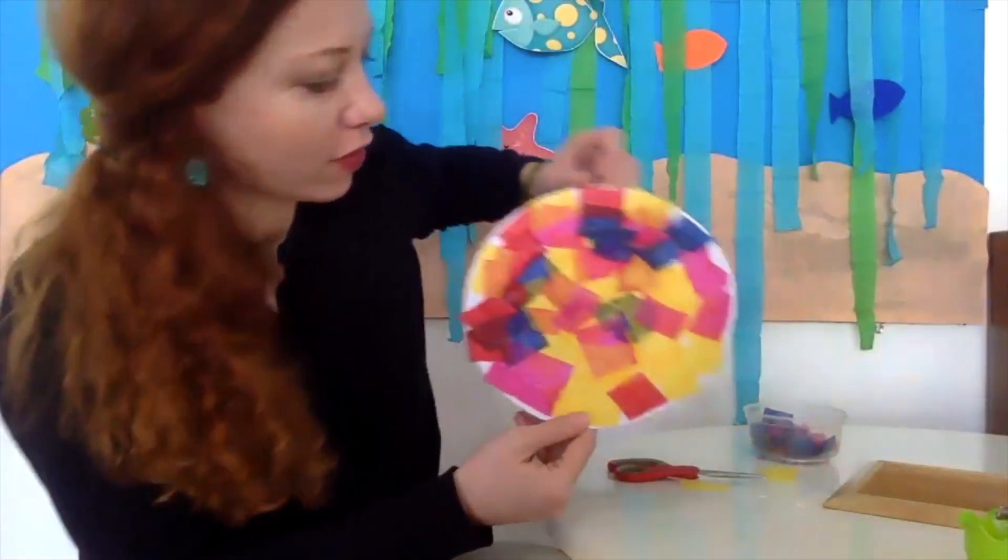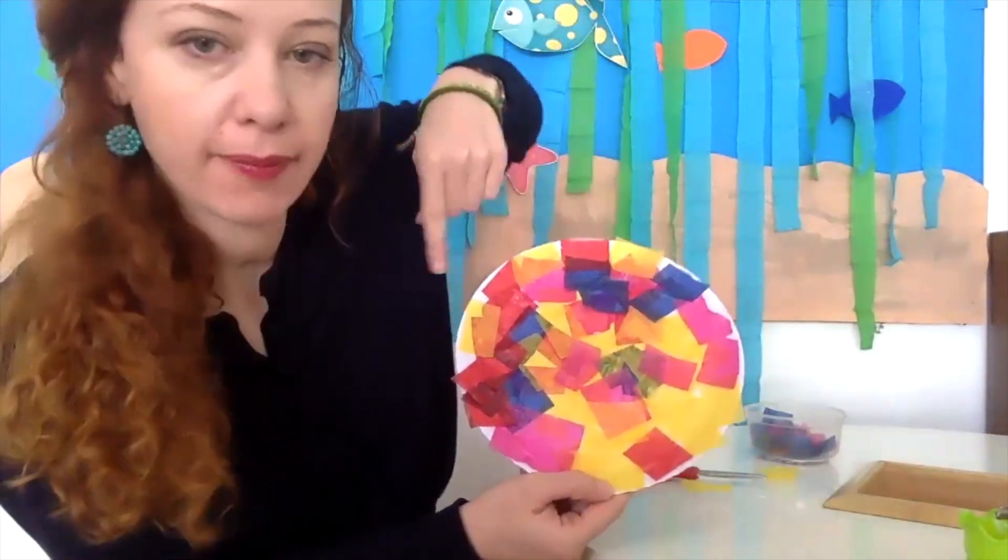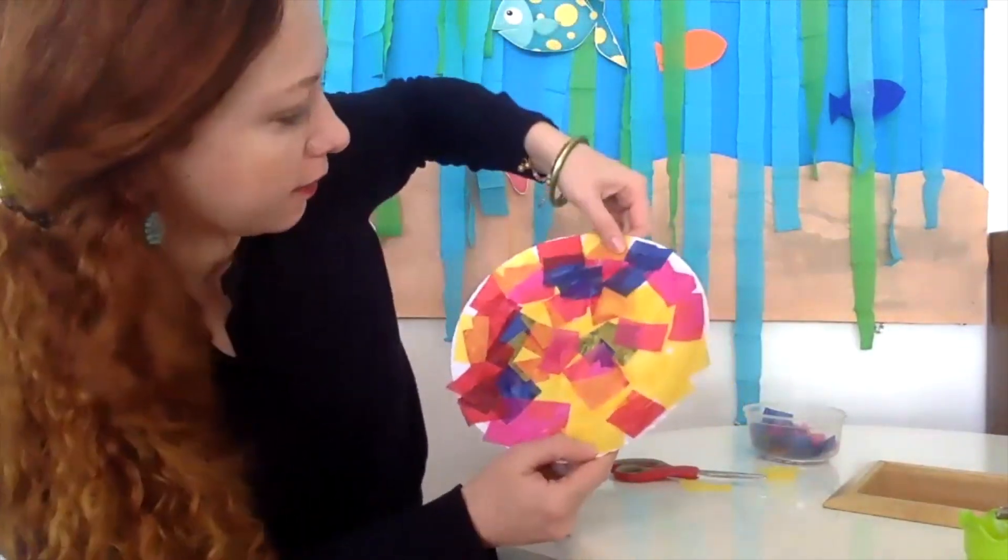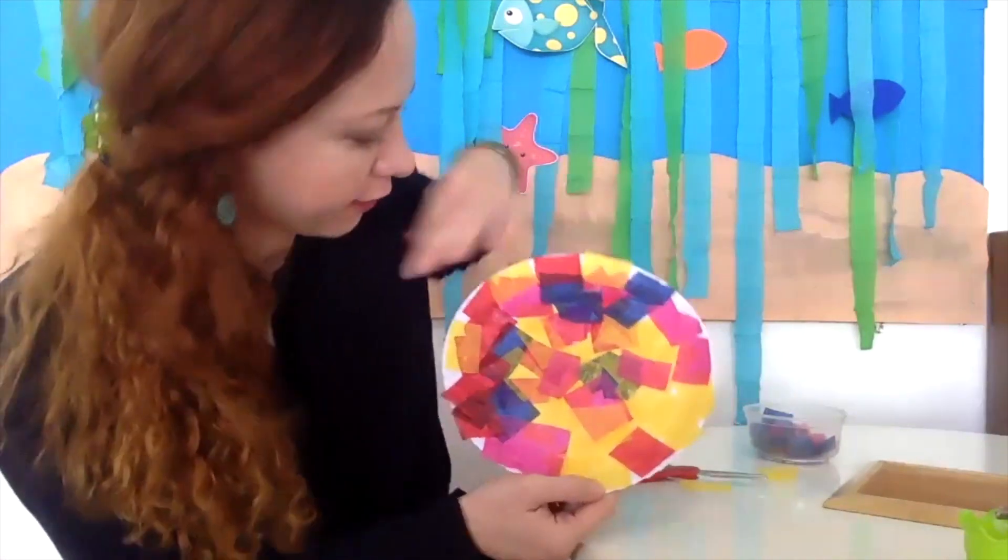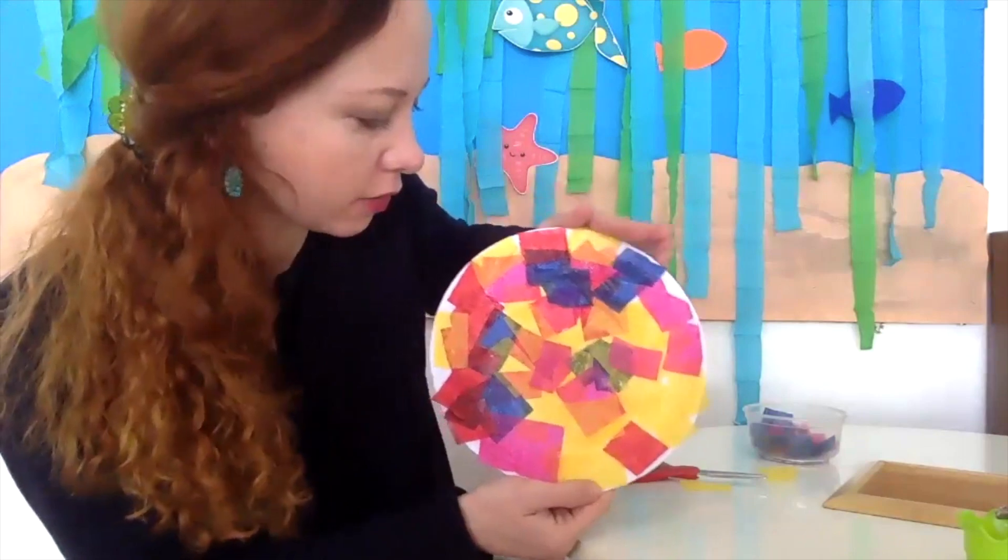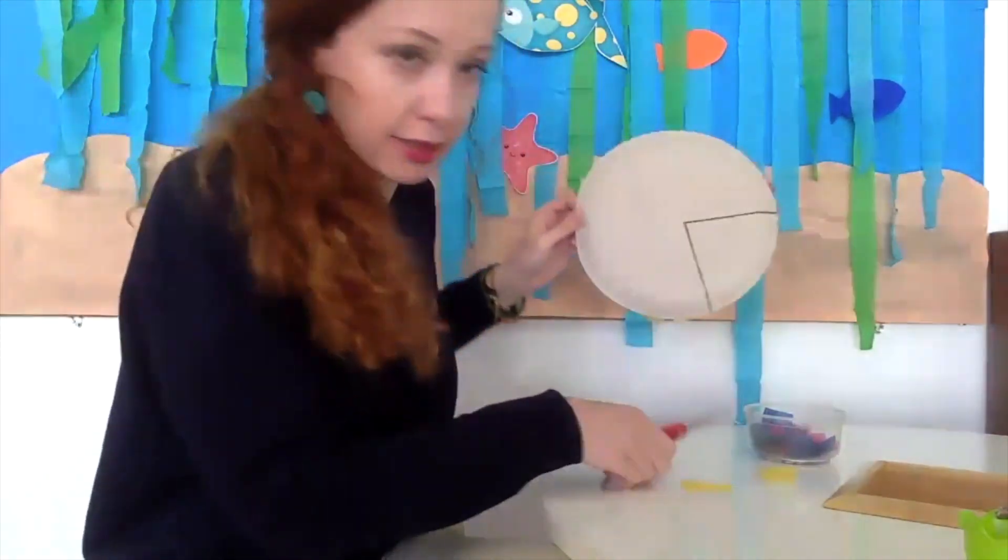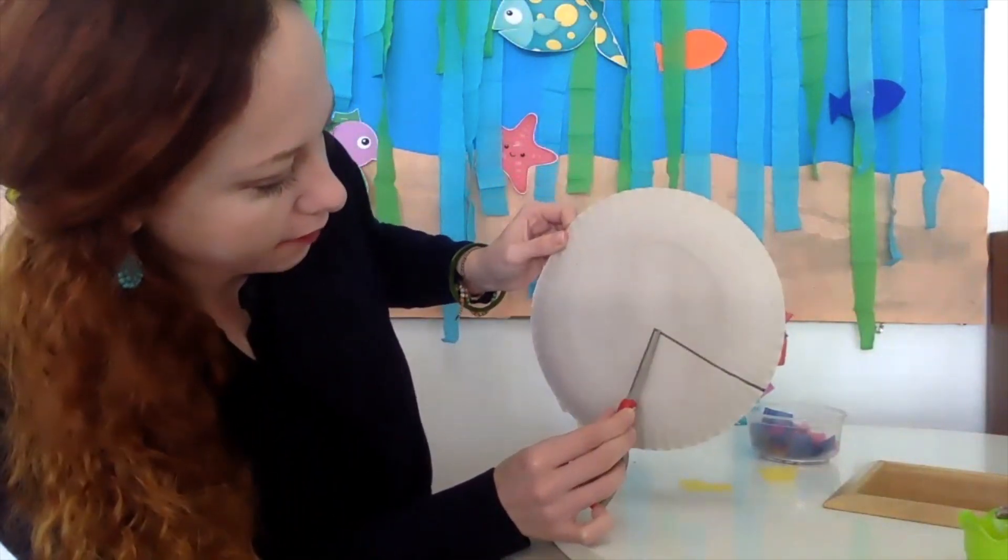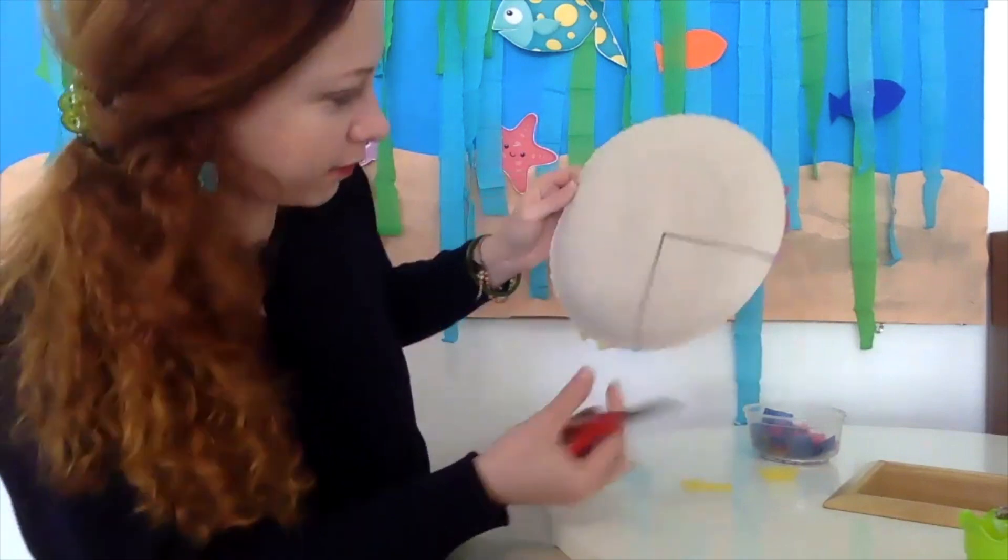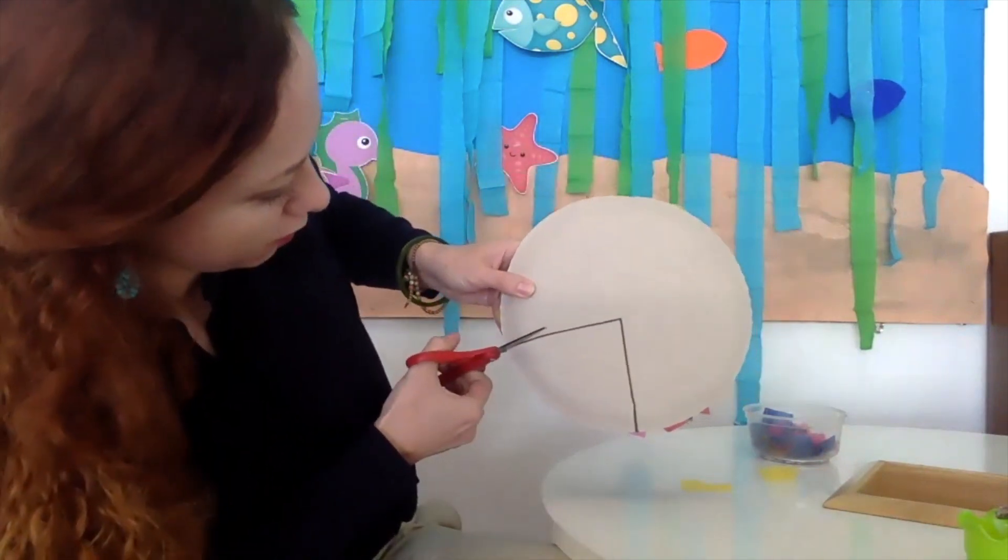Now I've covered the paper plate with the tissue paper as you can see, and then it needs to dry a little bit. So wait like five to ten minutes and then you can turn it around, get yourself a scissor, and then we need to cut on the black line.